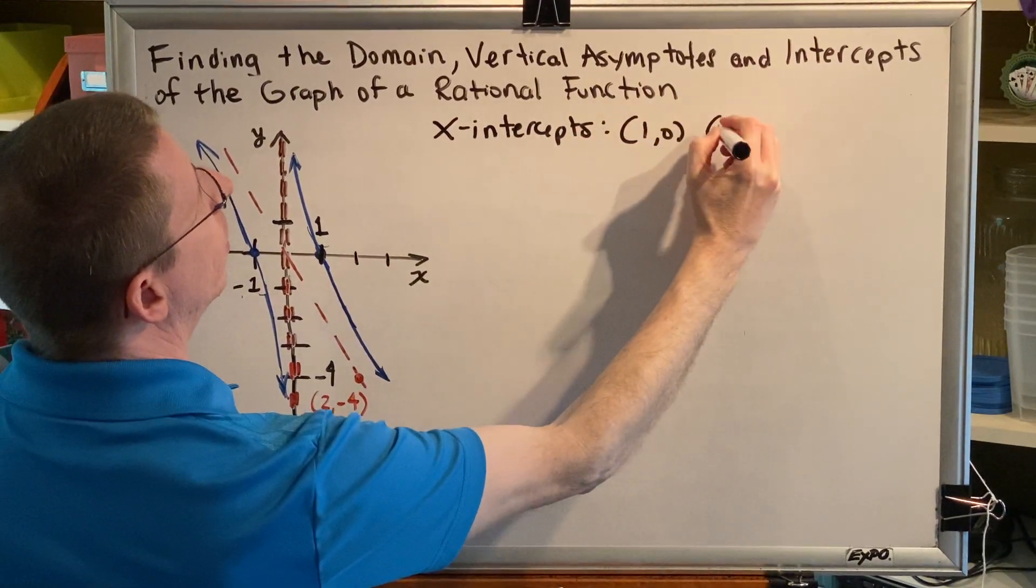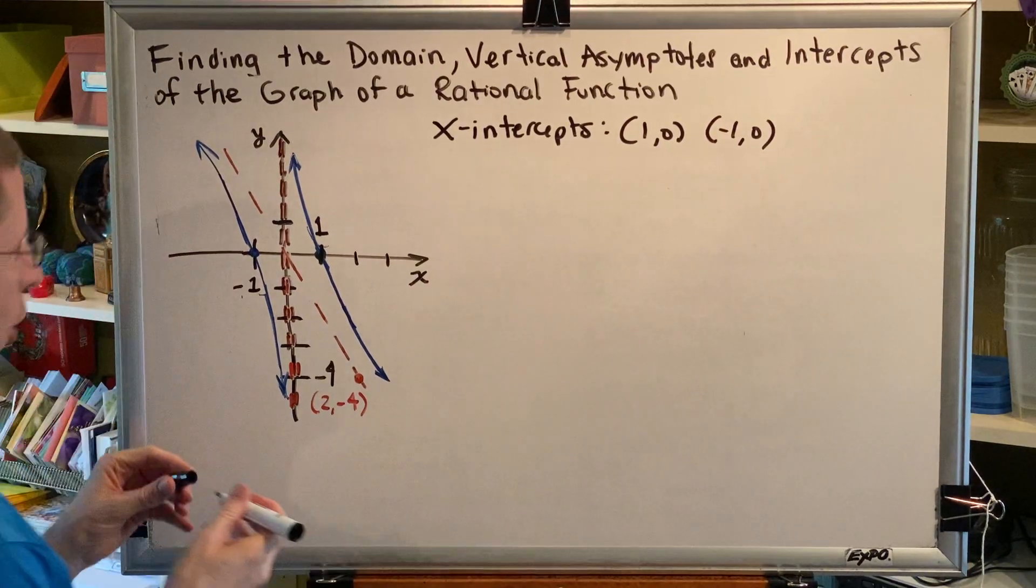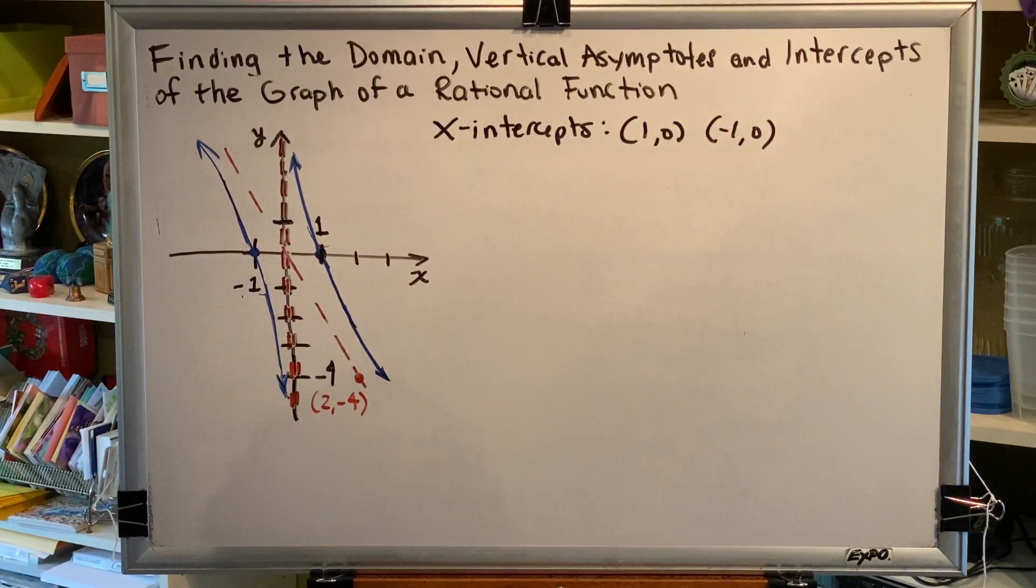1, 0, negative 1, 0. There are no y-intercepts. And the reason why is because we have a vertical asymptote sitting directly on top of the y-axis that is preventing the blue curve from reaching it.